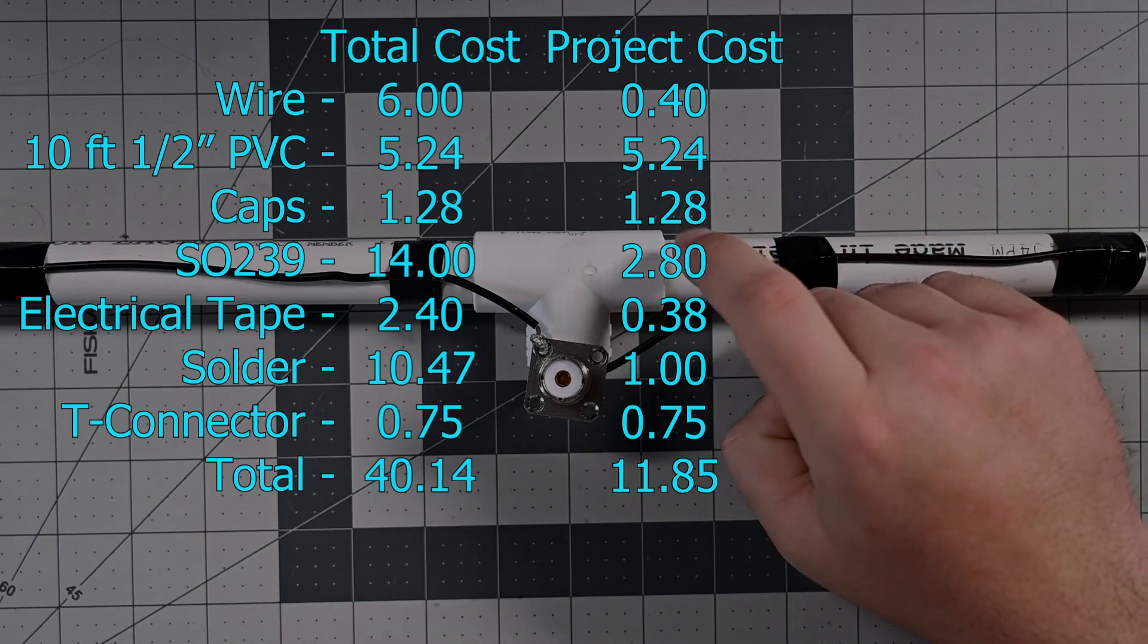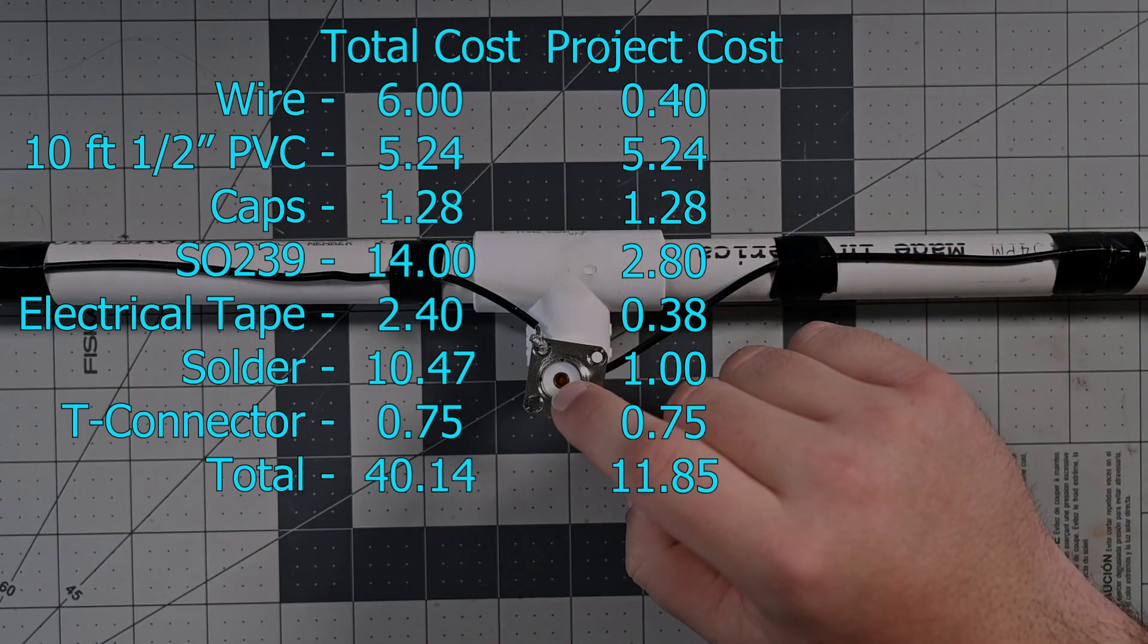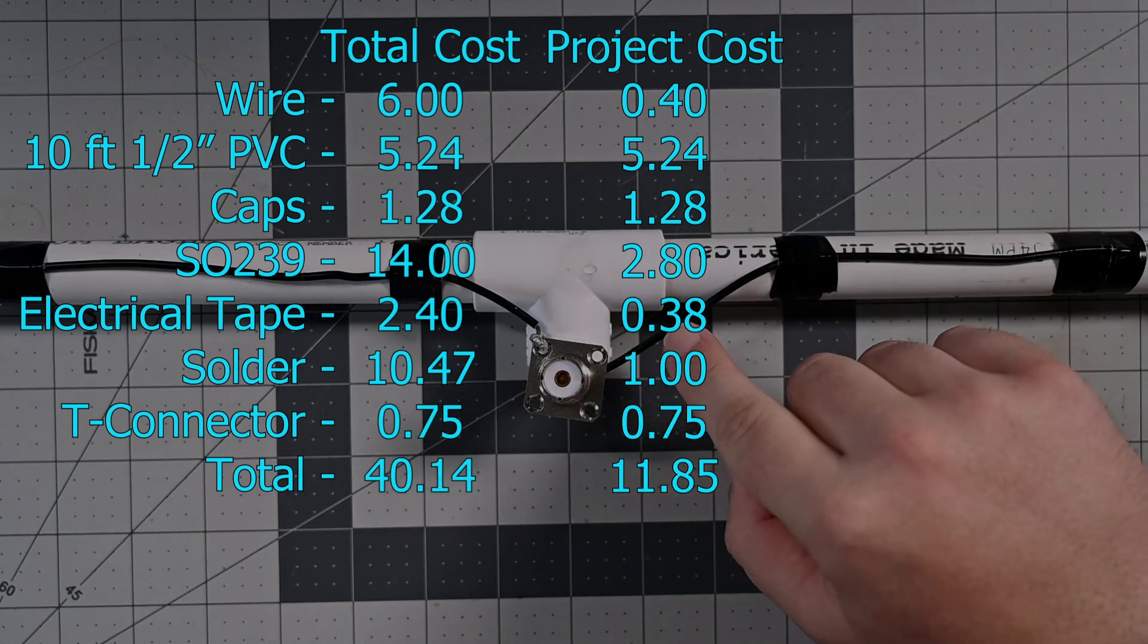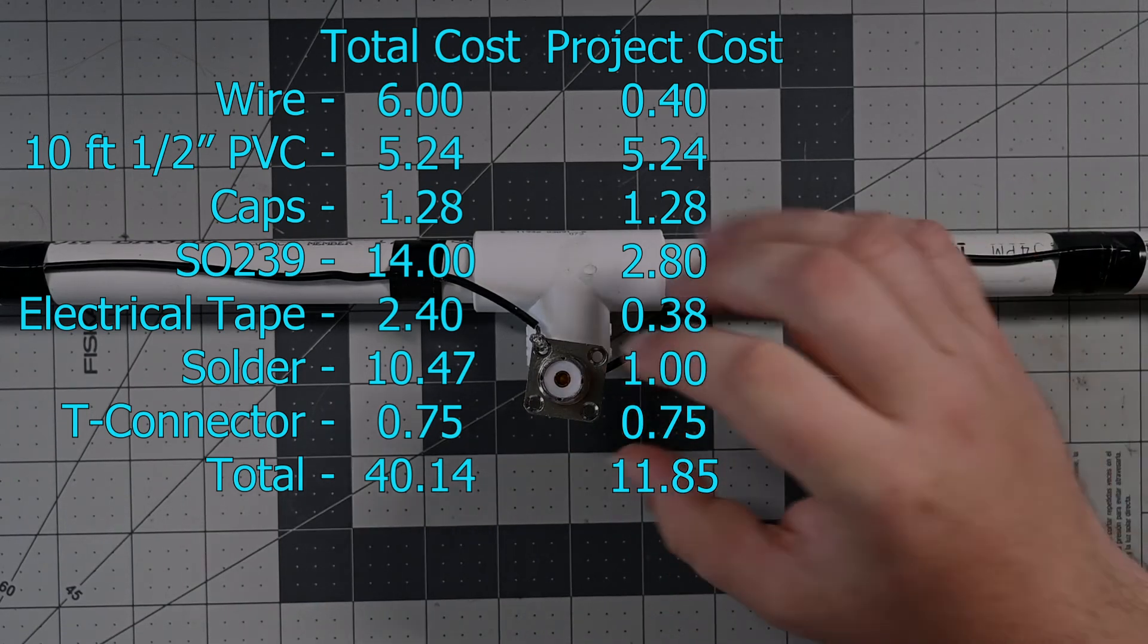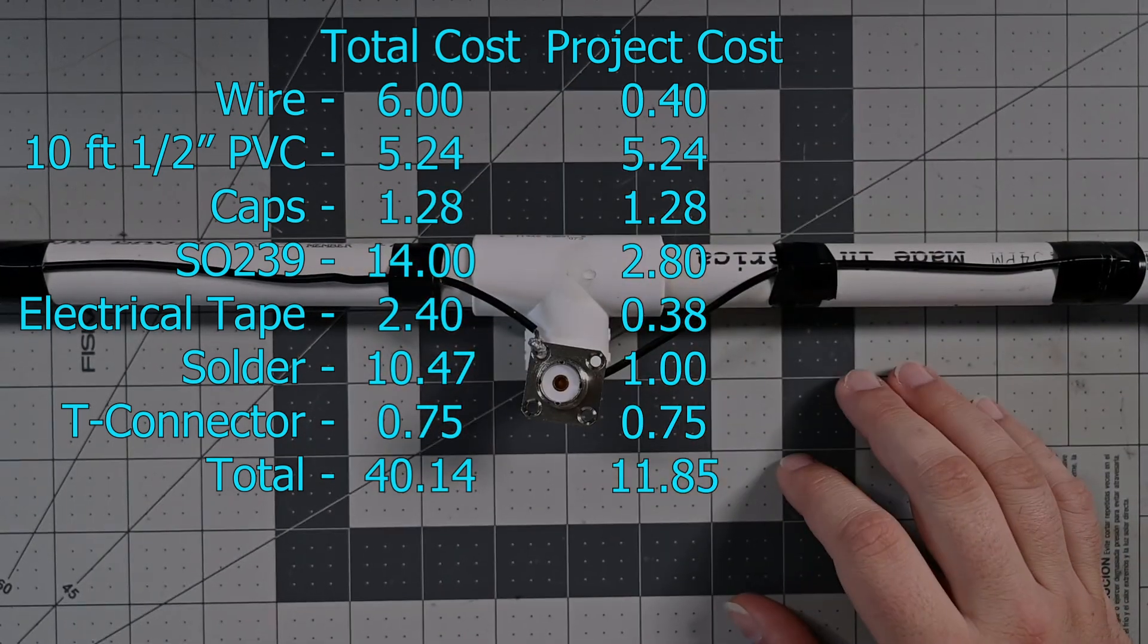And the lion's share of that is the PVC and the connectors. Next to that is the SO239. The consumable portion of the wire, 17 centimeters of wire, a little bit of tape, and a little bit of solder is nearly negligible. But I want to be very honest about how much this actually costs. Because I always feel like some kids are going to watch these videos.